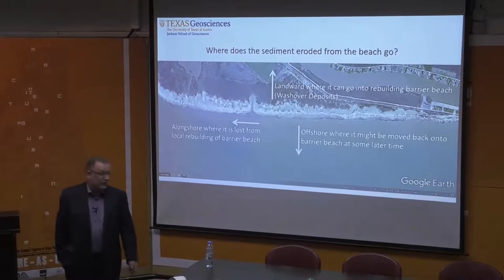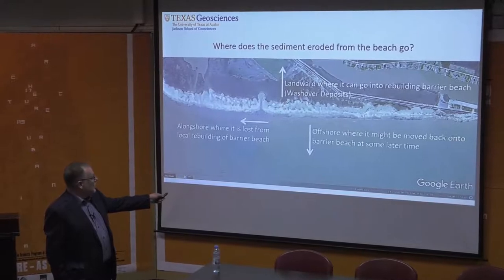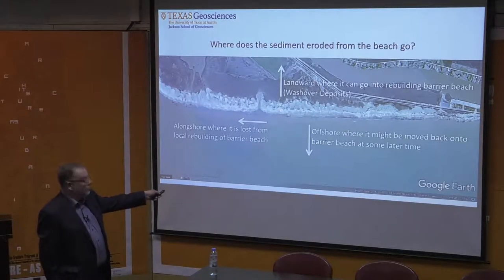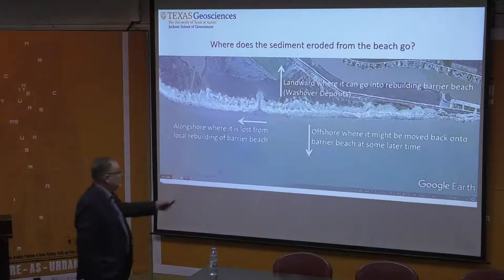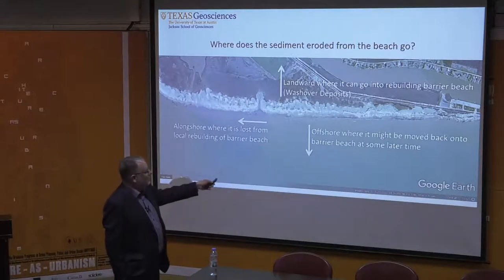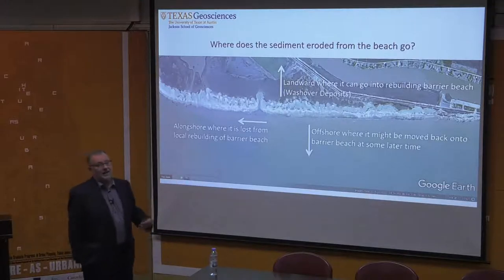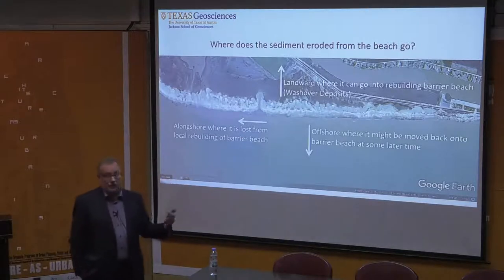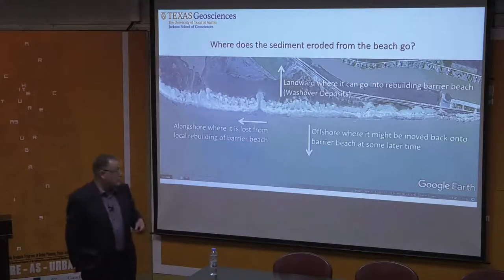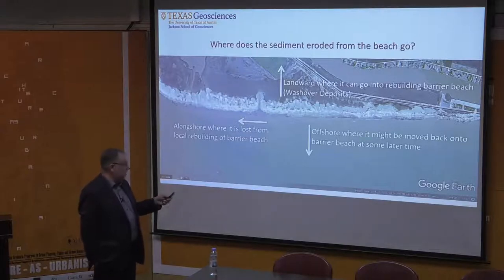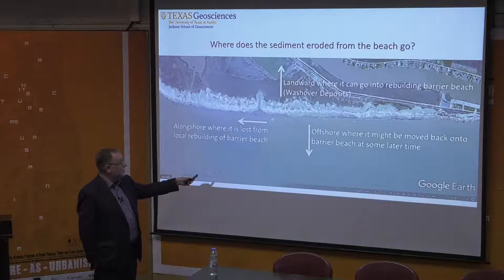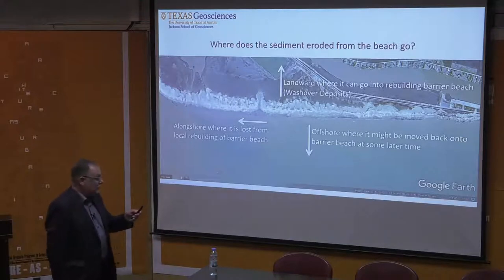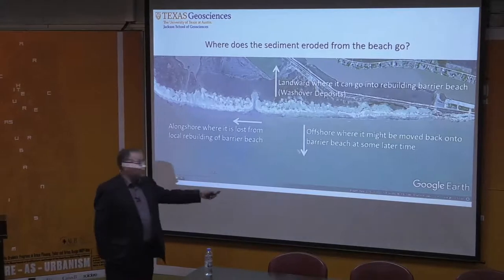After Hurricane Ike in 2008, on the central Texas coast, there are certain deposits brought landward — you can see those deposits right here. There was a tremendous amount of beach erosion. That landward-directed material acts to build and aggrade the coastline, and the elevation at which that sediment is deposited affects what plants grow on it and in turn affects the coastline's resiliency to future storms. We are very interested in predicting what those elevations will be.